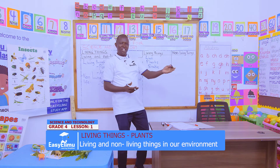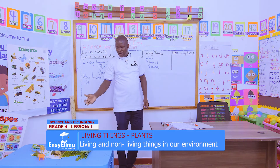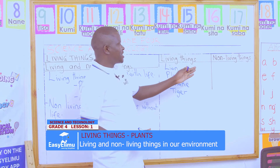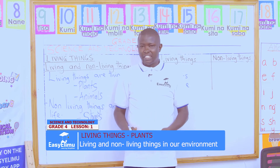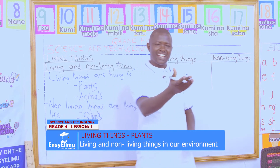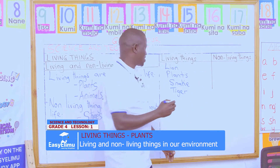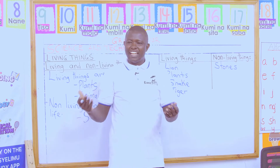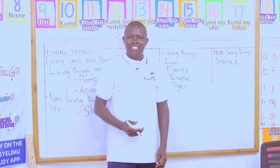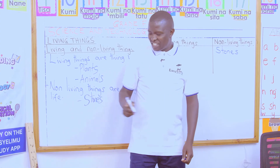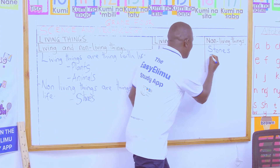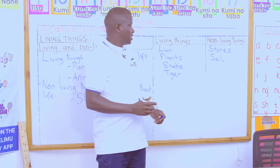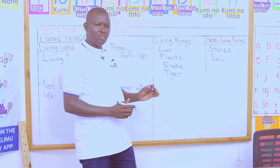Another example — Jen gives us tiger. Tiger is an example of a living thing. Now, examples of non-living things from our nature corner: John has given us stones — they don't have life, so we call them non-living things. Victor has given us soil as an example of a non-living thing.